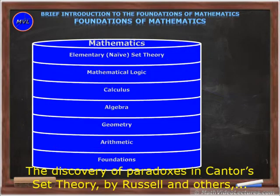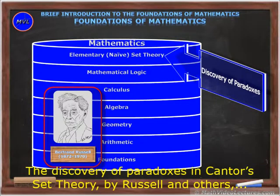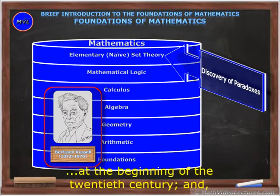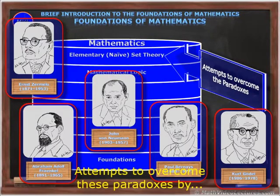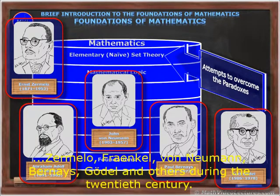the discovery of paradoxes in Cantor's set theory by Russell and others at the beginning of the 20th century, and attempts to overcome these paradoxes by Zermelo, Fraenkel, von Neumann, Bernays, Gödel and others during the 20th century.